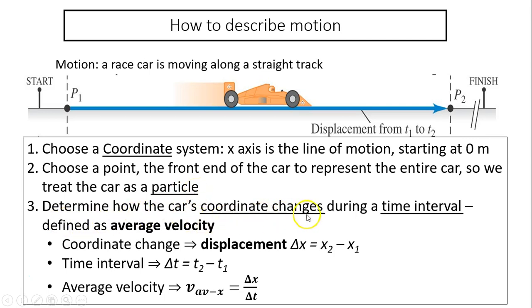To determine the car's coordinate change during the time interval, so it's defined as velocity. Velocity is coordinate change over time interval. Coordinate change, we call that displacement. It's also called delta x, change in position. x2 minus x1 equals delta x. Time is a time interval. That's t2 minus t1. And average velocity is the displacement divided by the total time interval.